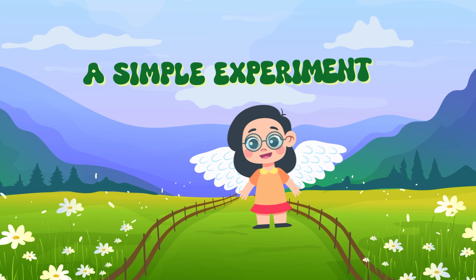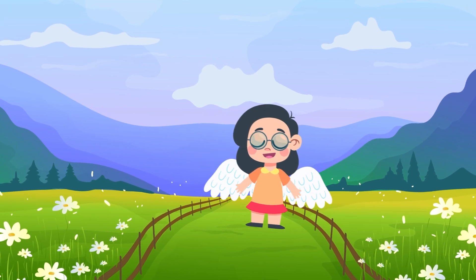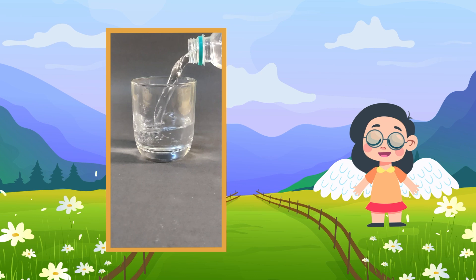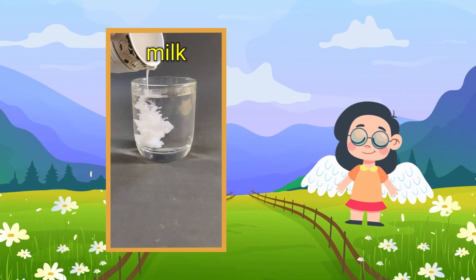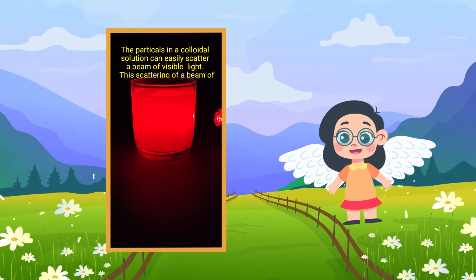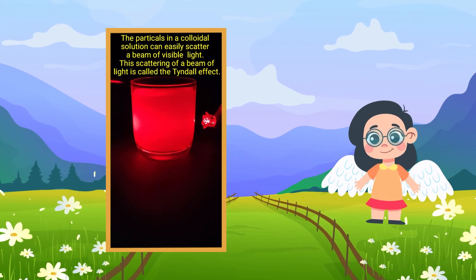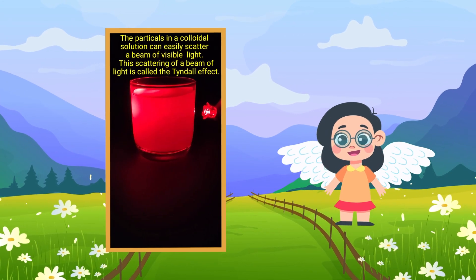A simple experiment. Want to see how scattering works? Here's a fun experiment you can try. Fill a glass with water and add a tiny drop of milk. Shine a flashlight through the glass in a dark room. Watch how the light looks bluish from the side and orangish from the other side. Just like the sky and sunsets.